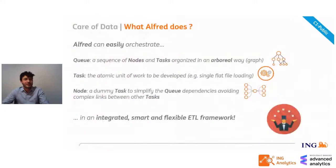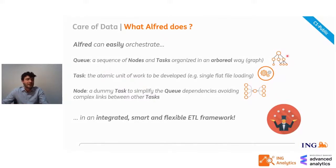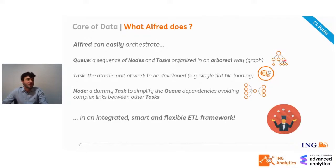Alfred orchestrates processes based on structure and rules defined in its own repository. Let's see some definitions before moving on. A queue is a composition of nodes and tasks organized in a graph structure. For example, in this structure, Alfred will execute the first task, and after that will run its three children in parallel if possible. After the first task completes, it can start its unique child. A task can be started only when both its parents have been completed correctly.